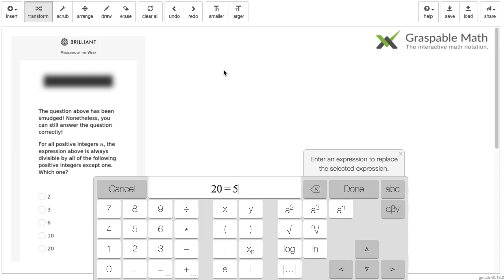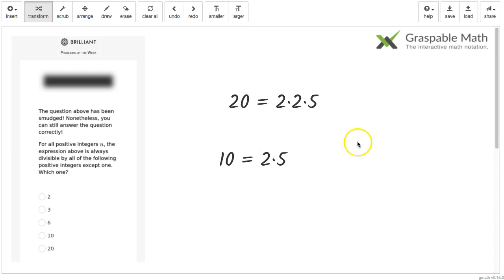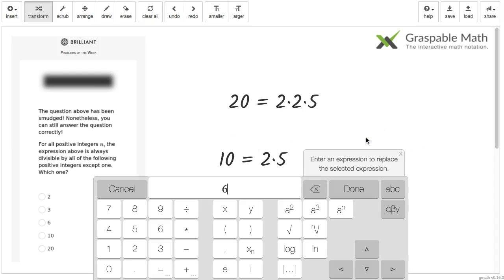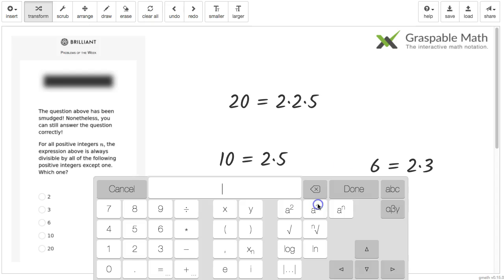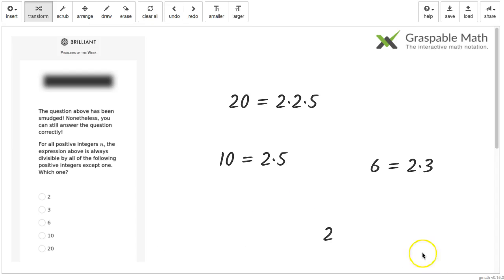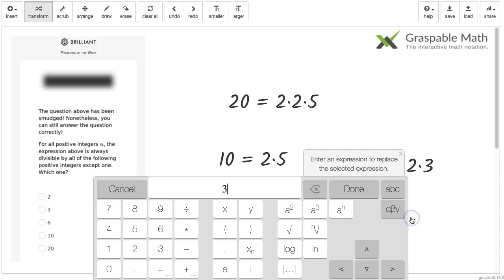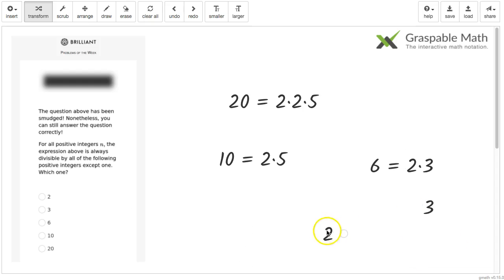So 20 is 2 times 2 times 5. And also 10 here is 2 times 5. And we have 6 equals 2 times 3. And finally just 2, which is a prime factor itself. And 3.